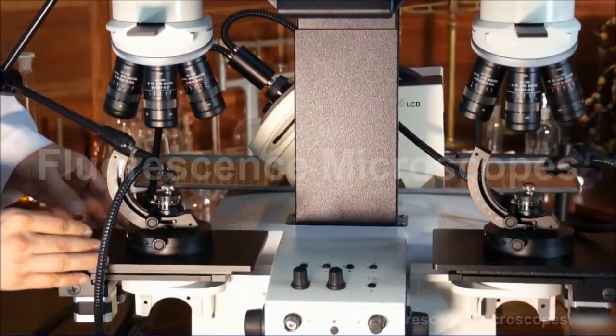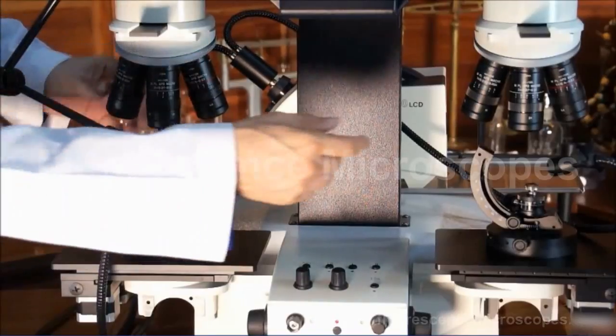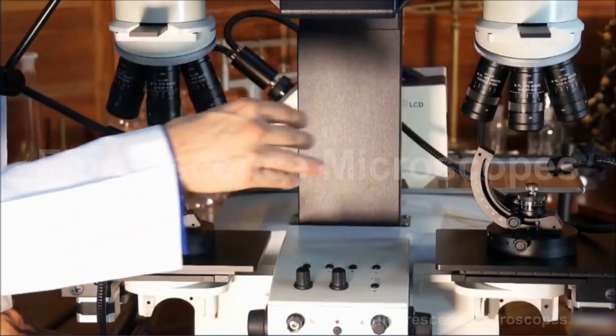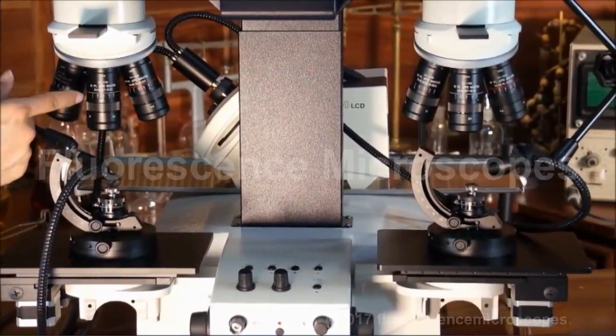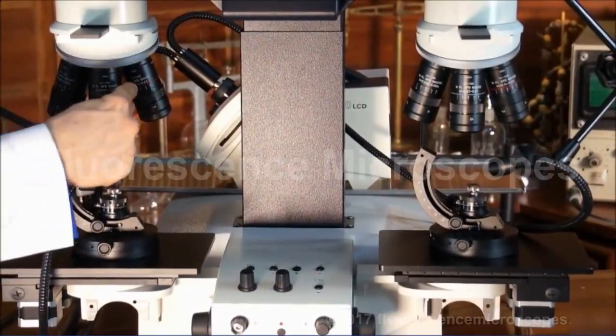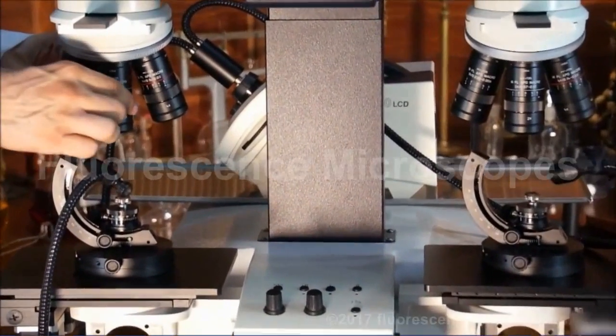This particular unit is configured with three of the Planapo macro objective lenses, three on each side. This particular one is configured with one, two, and four power. All of these have iris diaphragms.